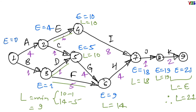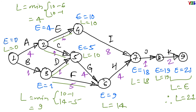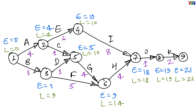Similarly, at event 2, L2 = minimum from 10 − 6 and 10 − 1, and the correct value is 4. Similarly, for the first event we will get L = 0. If you have not made any calculation mistake, you will always get L = 0 for the first event. Here we have completed the computation of latest allowable time.